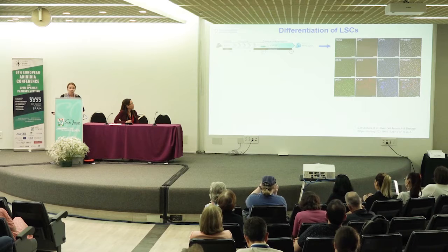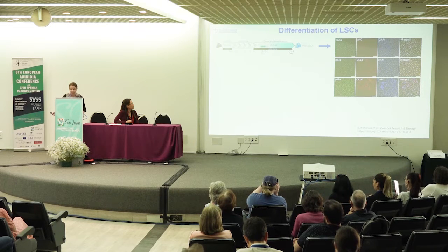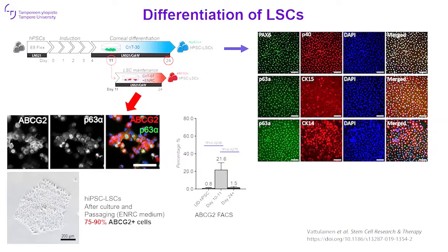We have characterized a lot of these cells that we are differentiating. It is a reasonably robust differentiation protocol. In about 24 days from the beginning of the differentiation, we already have this kind of enriched population of cells which highly express PAX6, but they are also highly expressing other limbal markers like cytokeratin 14 and 15.